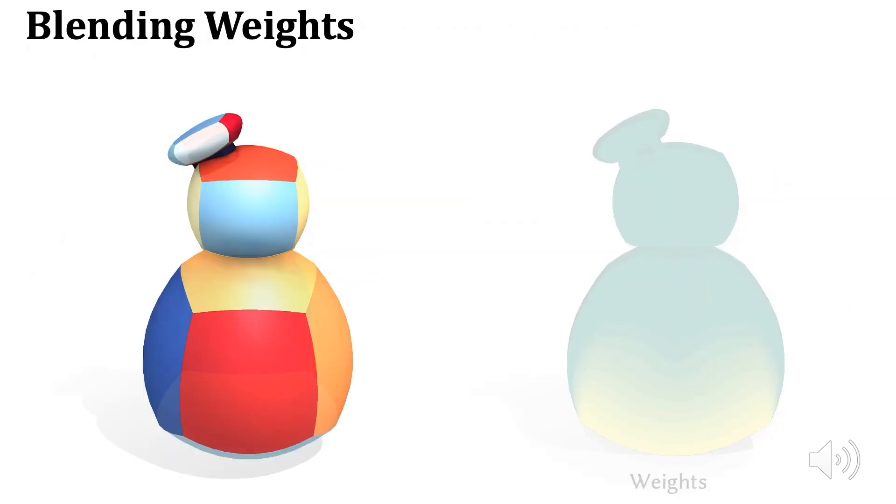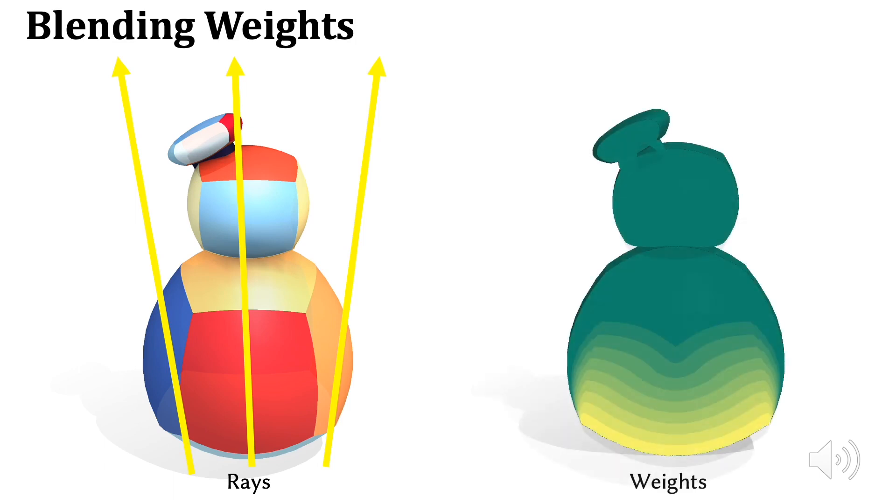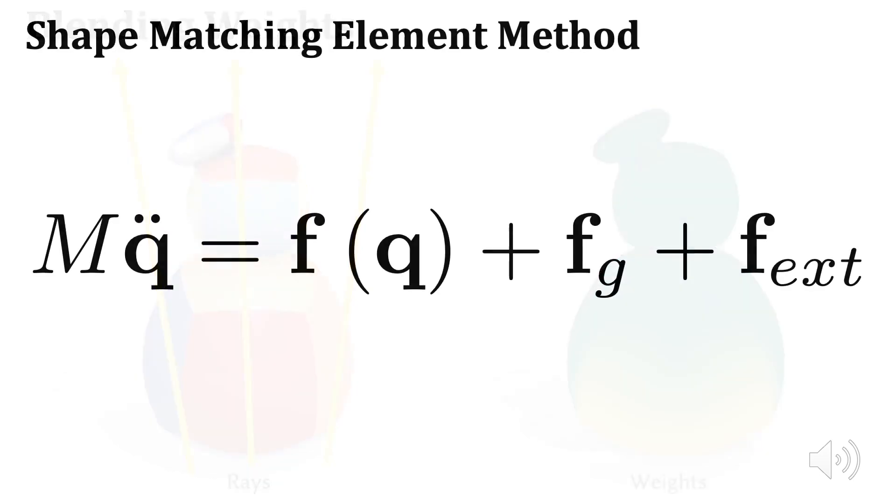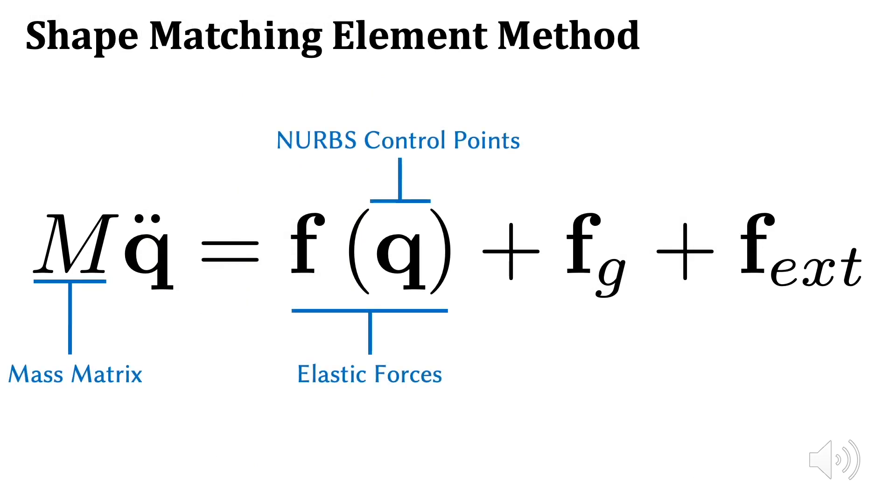The key to our method is that we implement both blending weight computation and volumetric integration using raycasting. This allows us to avoid any volumetric data structures. We handle pathological geometry by performing constructive solid geometry operations on the fly during raycasting. This allows us to derive and implement the Euler-Lagrange equations for the blended kinematic description, leading to a flexible and robust physics animation algorithm.